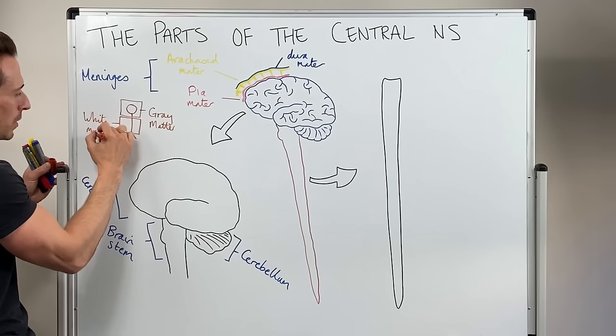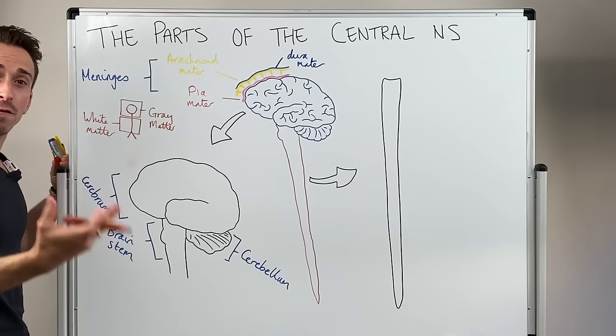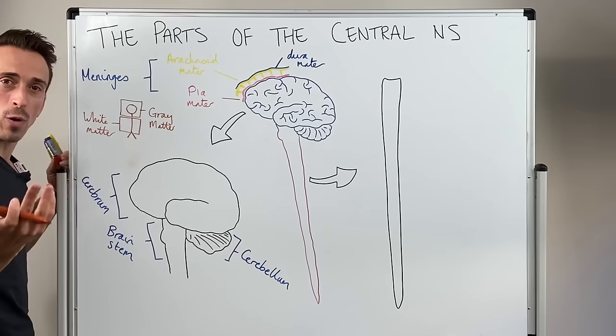Now, why is this the case? It's because the axons, all they do is send information. They need to send information really quickly. So they're surrounded by insulation, which is fat. And fat looks white. And that's why the axons are white matter.